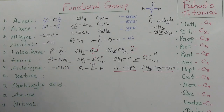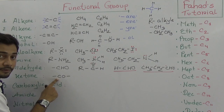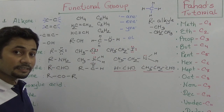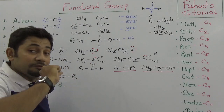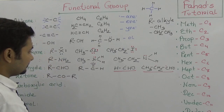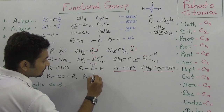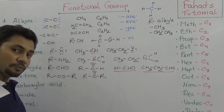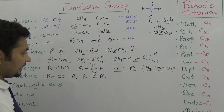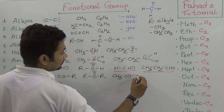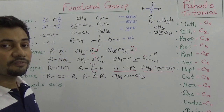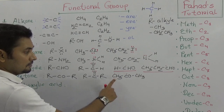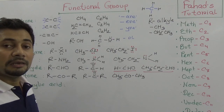Similarly, ketone has -CO- as its functional group — that is, an alkyl group on both sides of a carbonyl group (C=O). The carbon has two lone pairs of electrons on the oxygen. If we write CH3-CO-CH3, the number of carbons is three, so after the ketone suffix '-one' we say propanone. With four carbons it would be butanone.